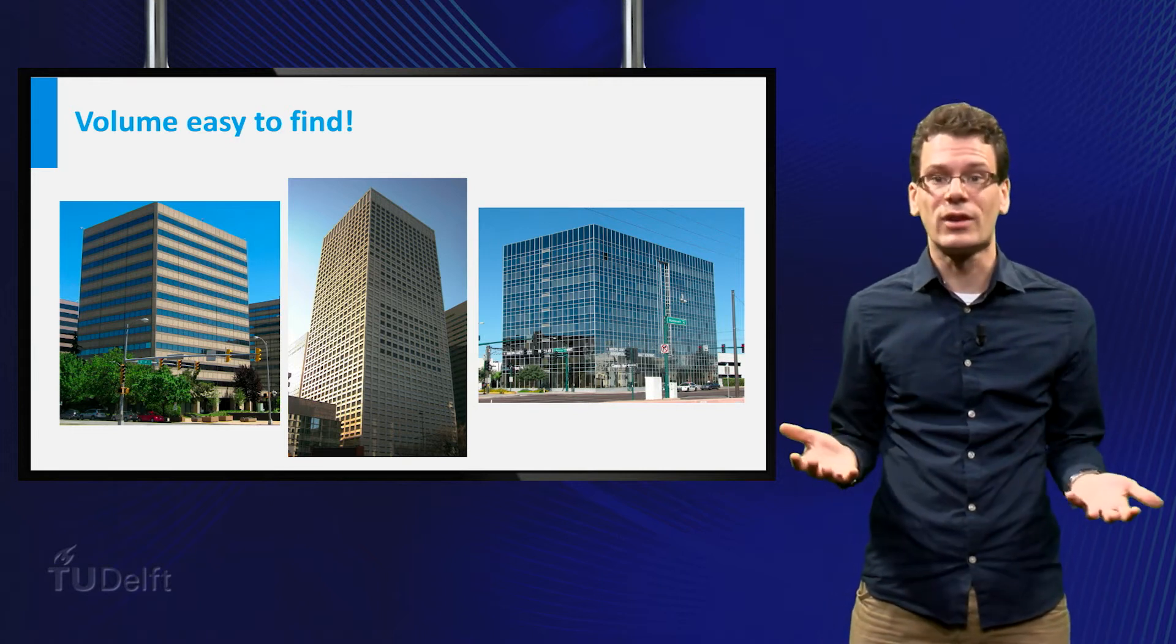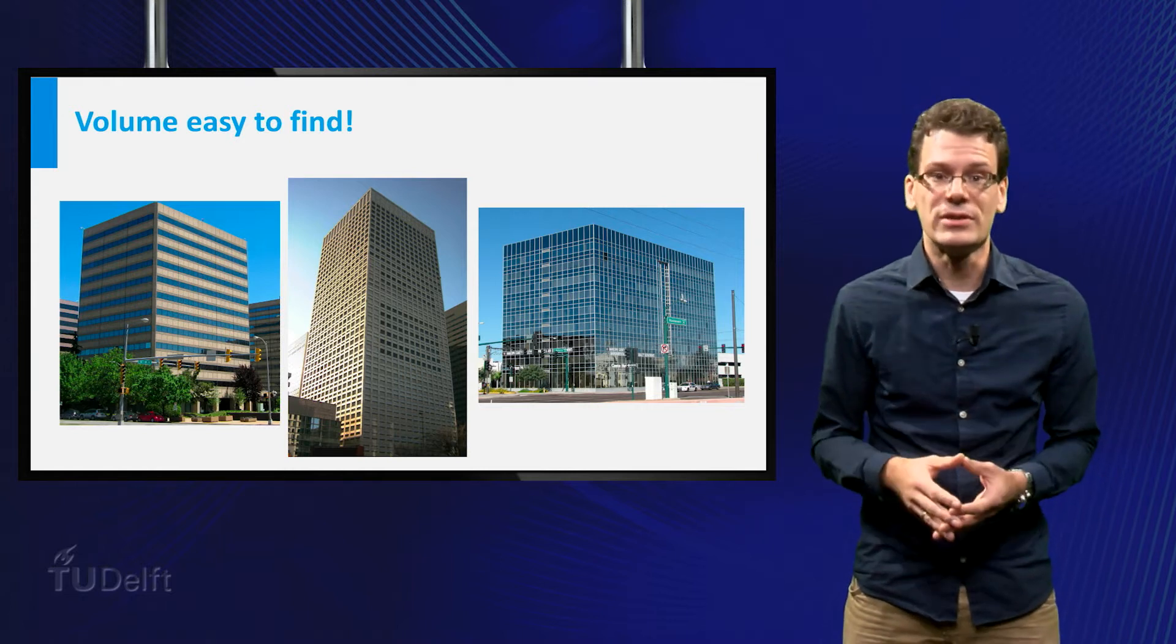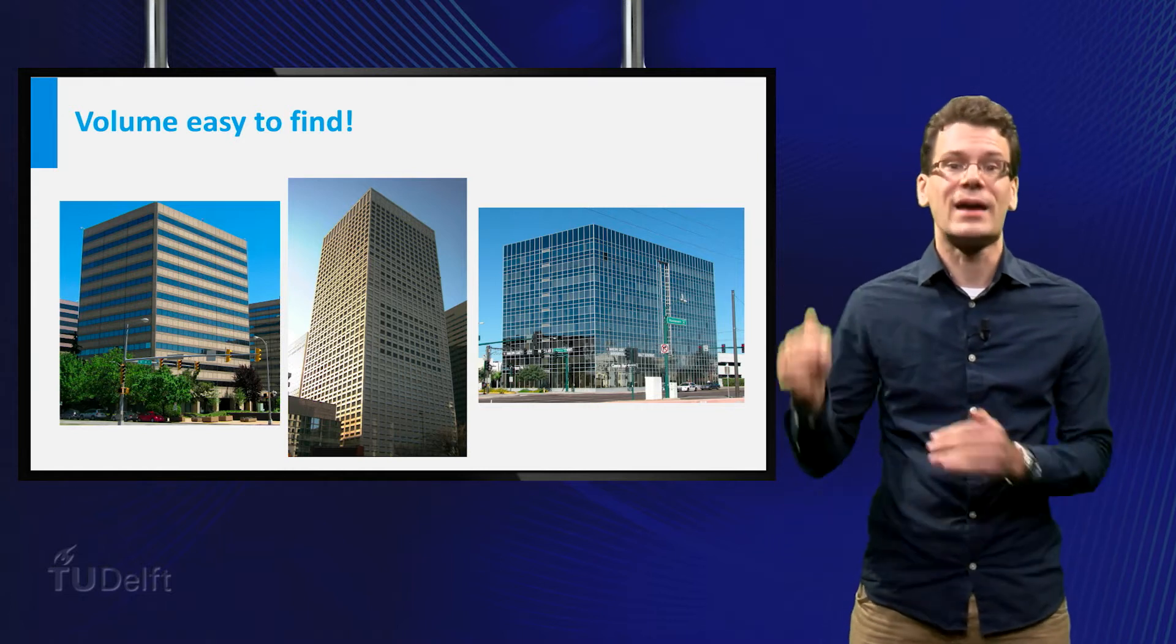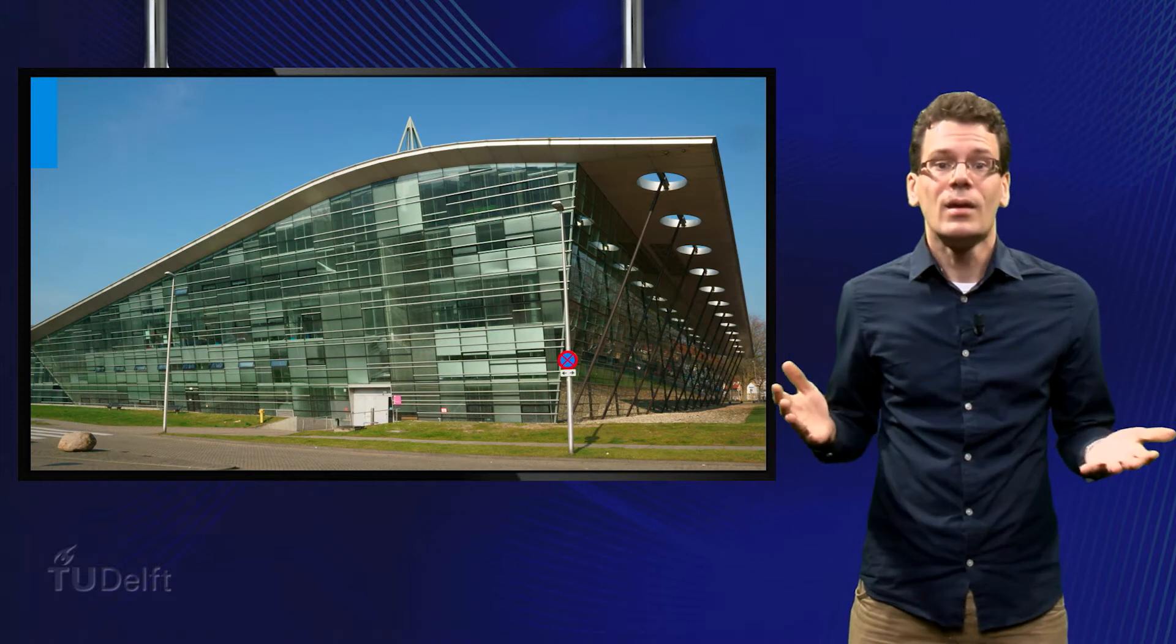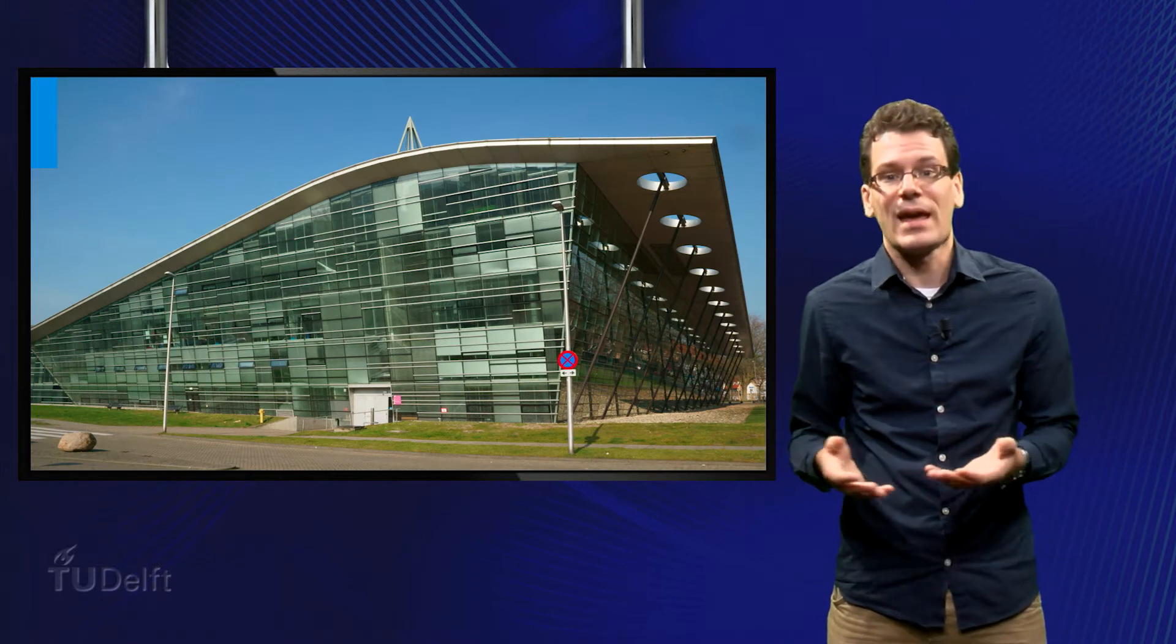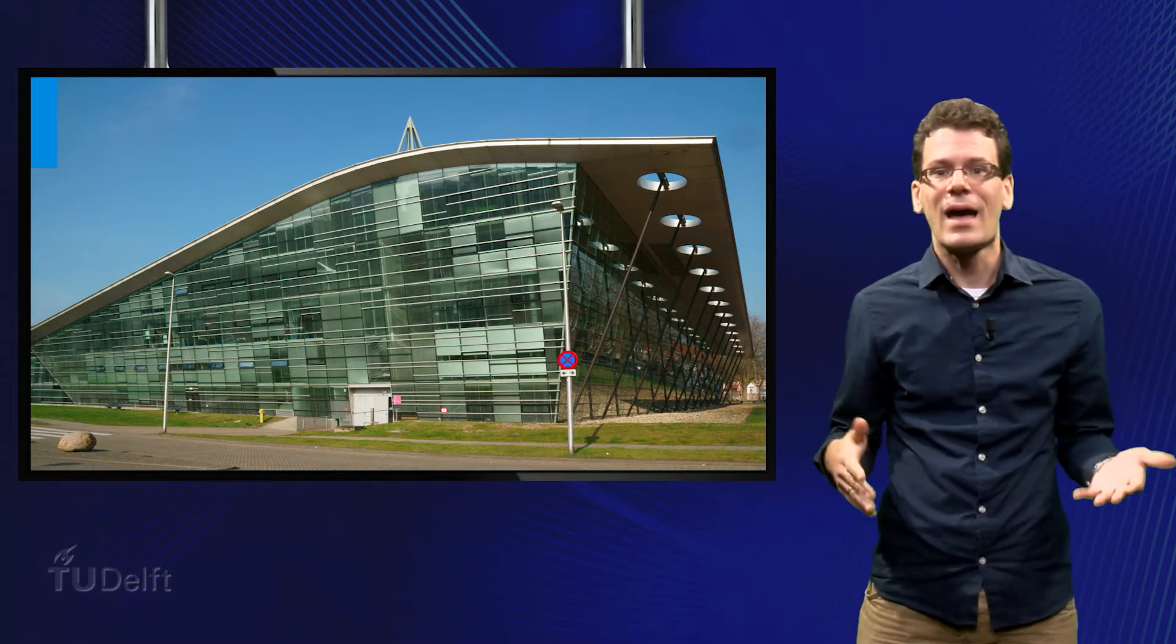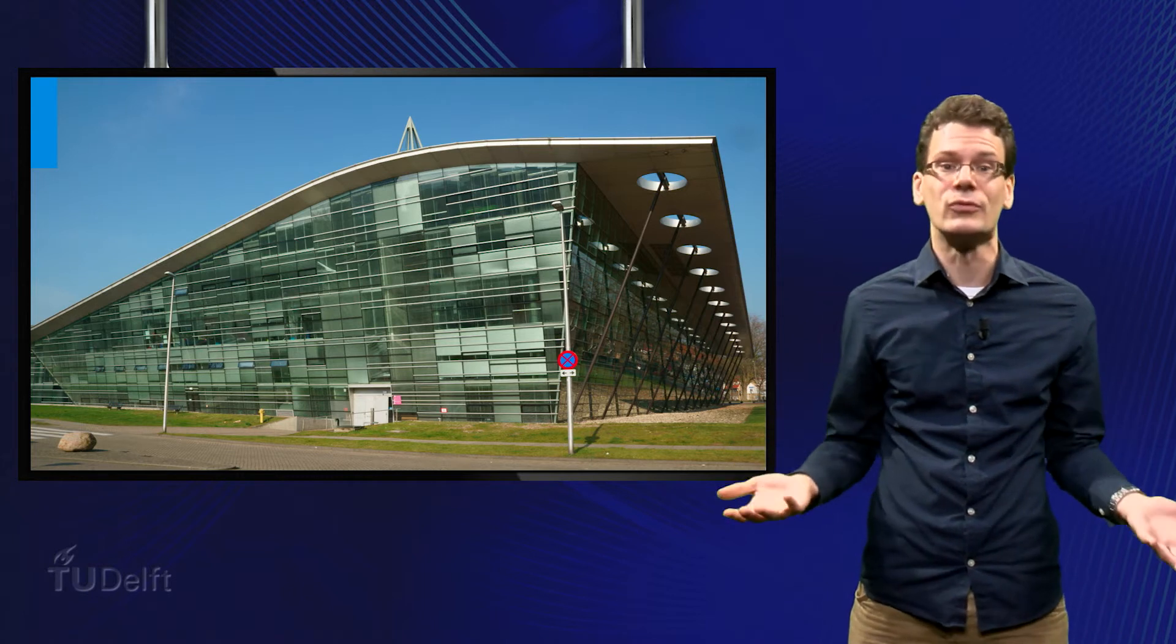If the building has the shape of a rectangular box, like many office buildings, then estimating the volume is easy. It is the base area times the height. But what if it is not a box, like the Delft University Library? As you see, its roof has a rather fancy curved shape. How to determine the volume of a building with a curved roof?